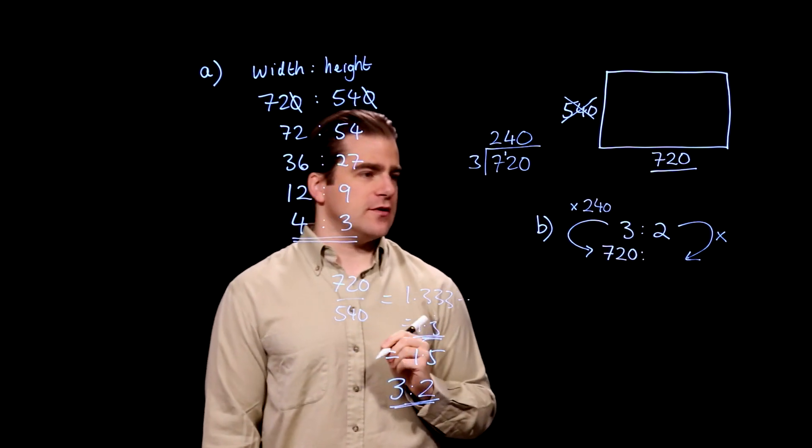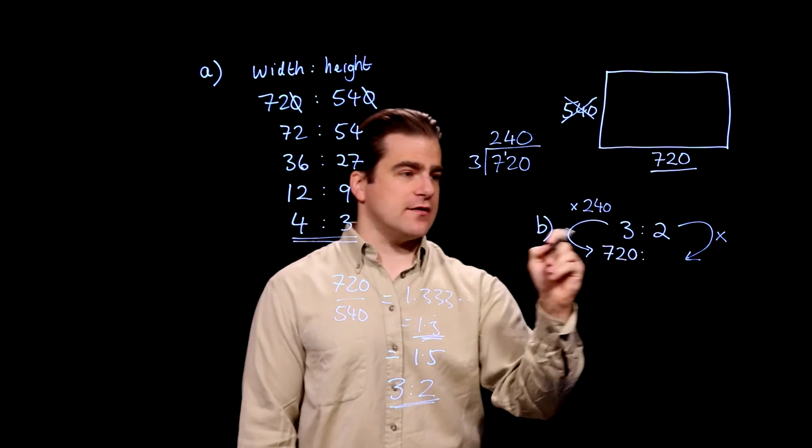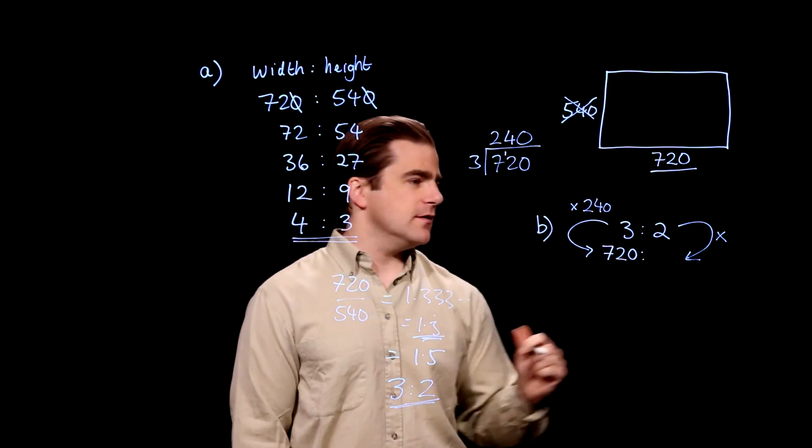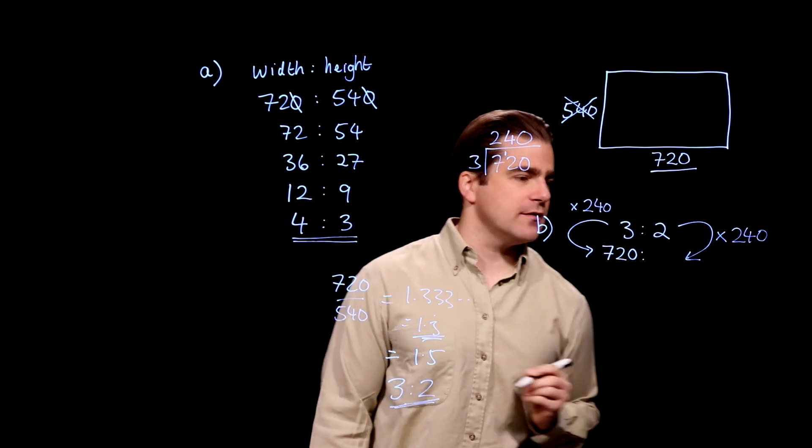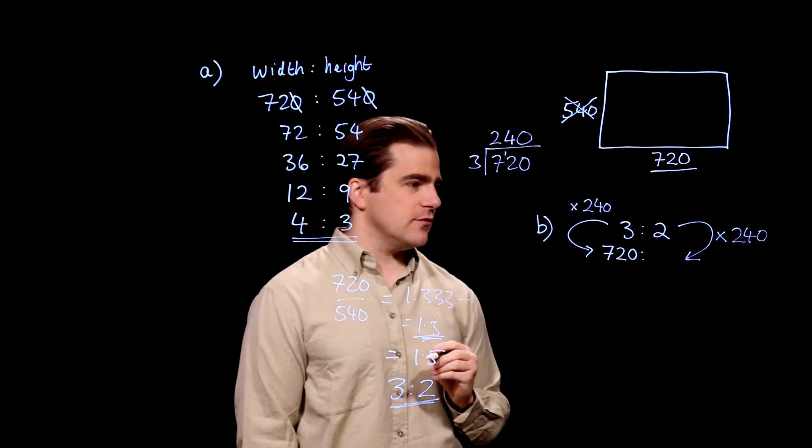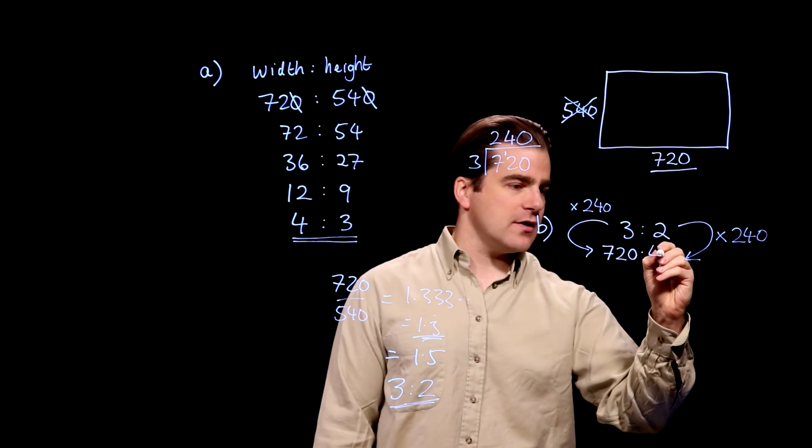So 720 divided by 3 is 240. So our scaling factor is 240. So we have to multiply 2 by the same scaling factor. 2 times 240 is 480. That's the answer.